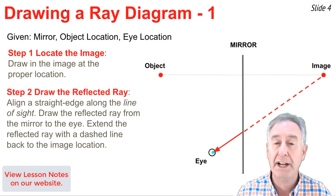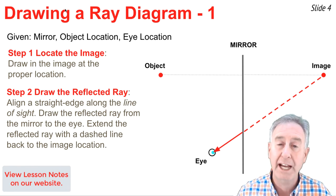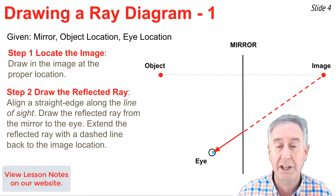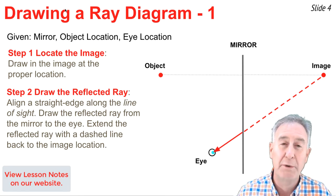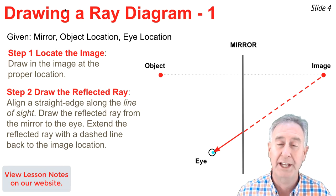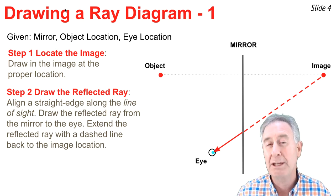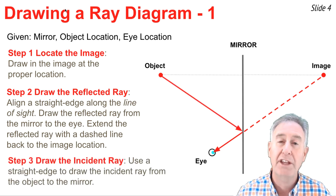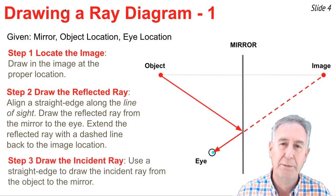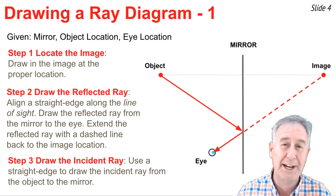The second step is to draw the reflected ray from the mirror to the eye of the observer. You do this by aligning a straight edge up between the eye location and the image location — this is the line of sight. Draw a reflected ray from the mirror to the eye, put an arrowhead on it, then extend that reflected ray backwards behind the mirror to the image location to indicate where the person is sighting. The final step is to draw the incident ray from the object to the mirror at the location where the line of sight intersects the mirror. Put an arrowhead on that incident ray, and now you have your ray diagram finished.